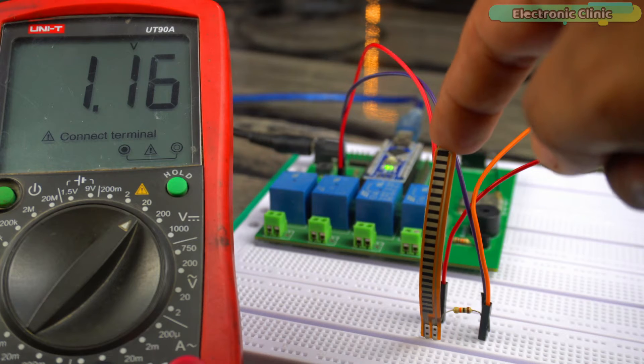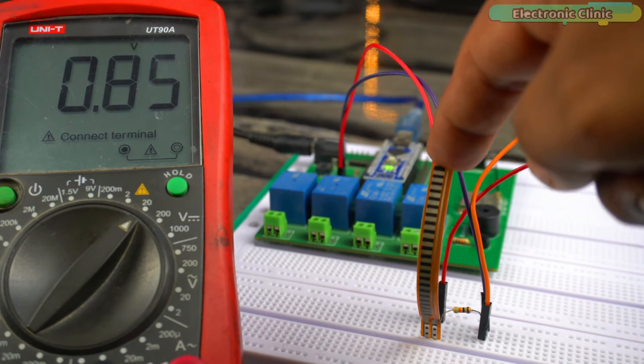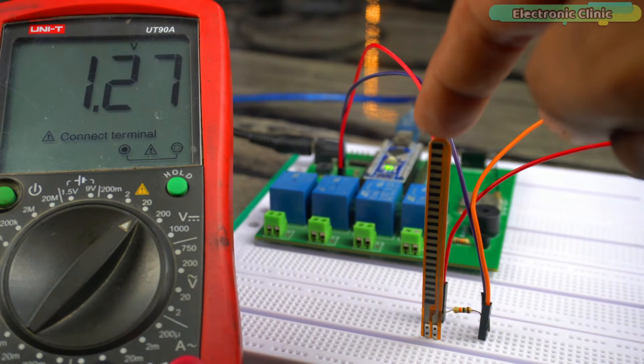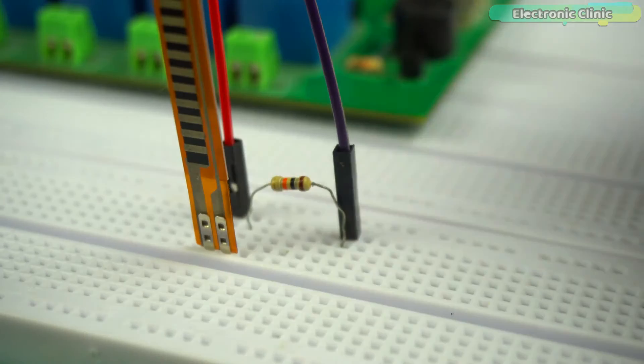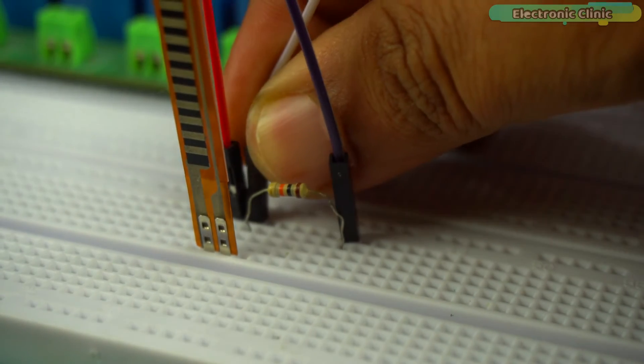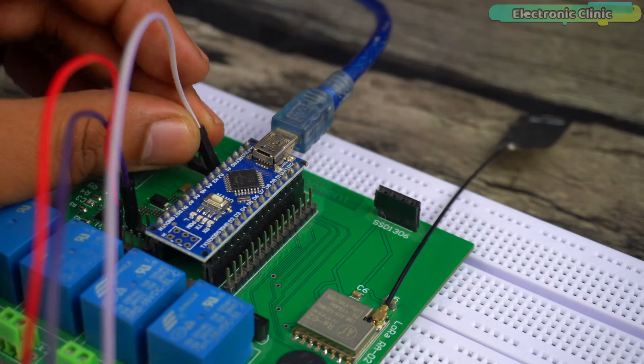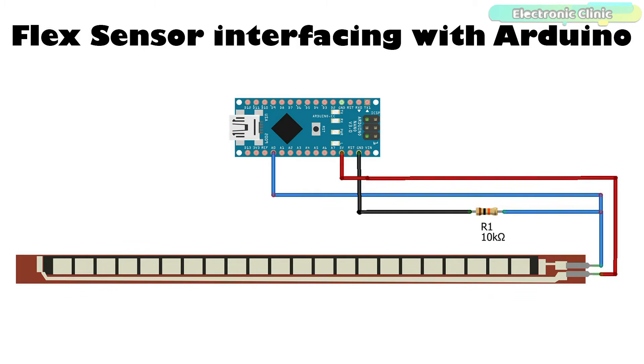But since a flex sensor is a non-linear flexible resistor, which can be used as a flexible potentiometer, by bending this sensor, we can change the resistance, and this way we would be able to generate different voltages. Now, to read this change in voltage, we can connect a wire from the middle of this voltage divider circuit to the Arduino analog pin A0. For the connections, you can follow this circuit diagram.